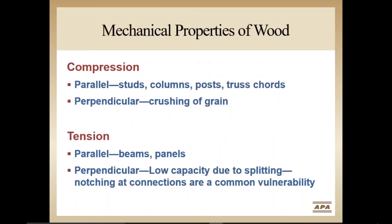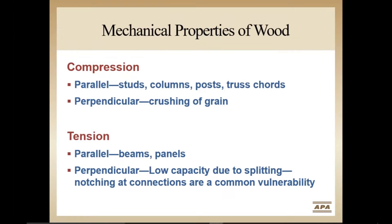In compression, wood is utilized vertically as studs, columns, and posts. Wood is also used in compression in truss assemblies, such as at the top chord and some web members. Compression applied perpendicular to the grain is weaker than if applied parallel, since it crushes more readily.